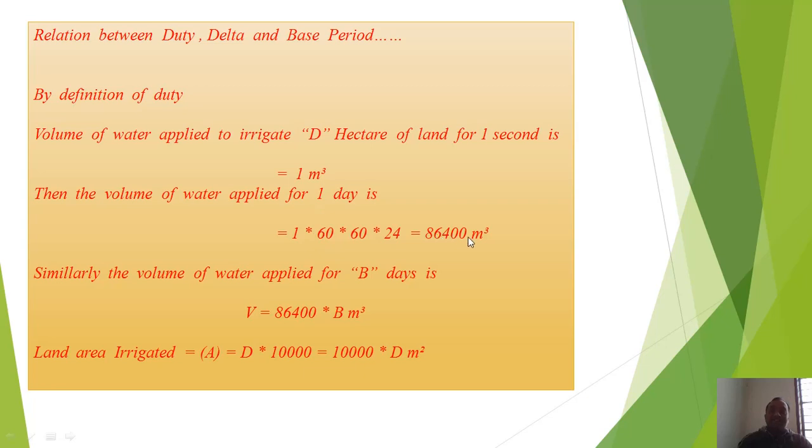Similarly, the volume of water applied for B days is V equals 86,400 × B meter cube. Land area irrigated A is equal to D × 10,000 meter square. The D is in hectare, we have converted it into meter square.